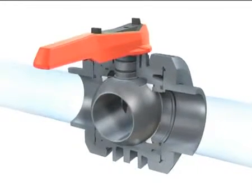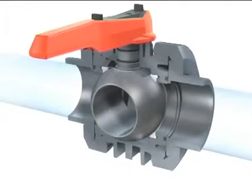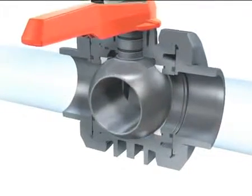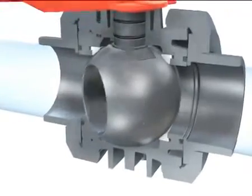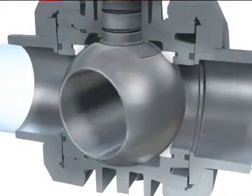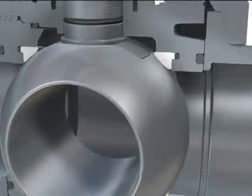The heart of the ball valve, the ball itself, has a glass smooth surface. This makes for a low operation torque while remaining 100% water and airtight.